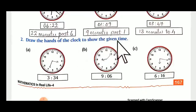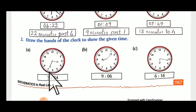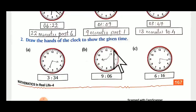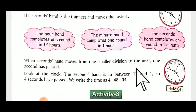Draw the hands of the clock to show the given time. Three thirty-four: the shorter hand between three and four, and the bigger one nearing to seven — so it will be three thirty-four. Nine six: the shorthand at nine and the bigger needle one minute line after one — it will be nine six. Similarly do for C also. Then we will read with the seconds hand in Activity 3.